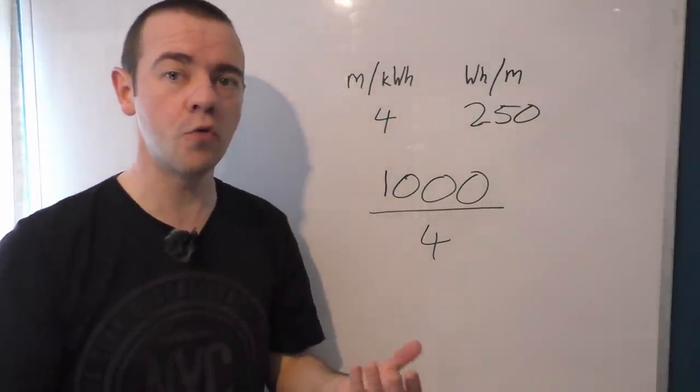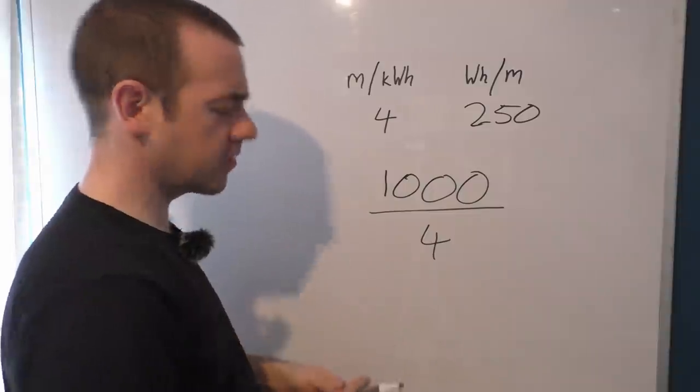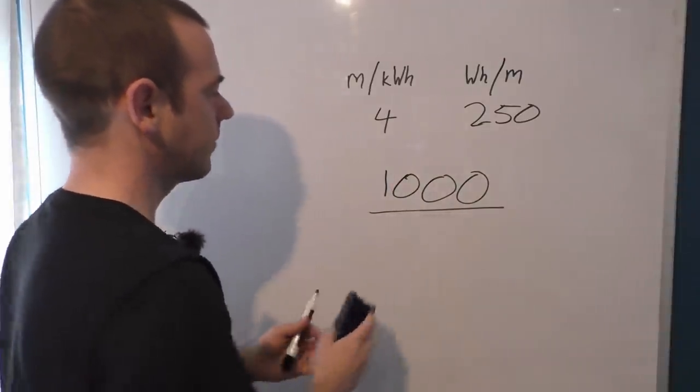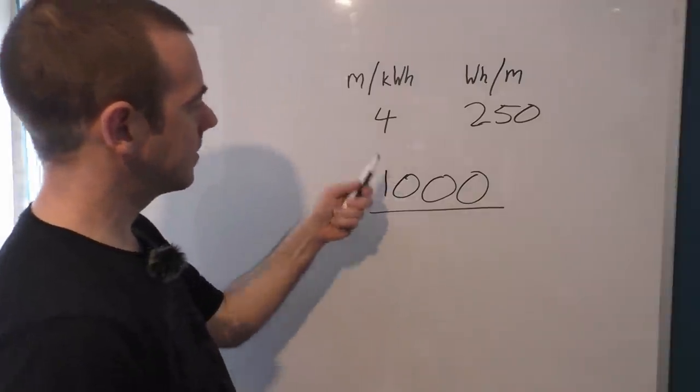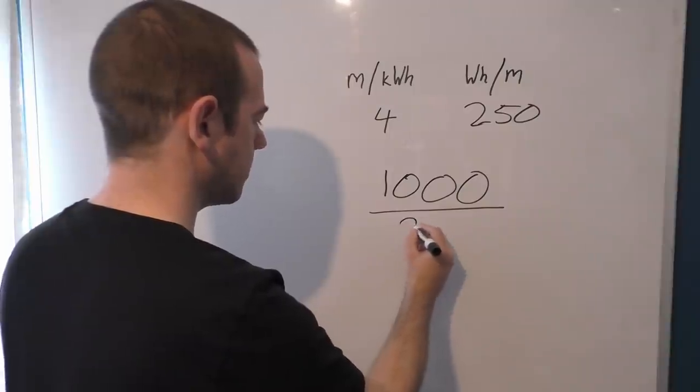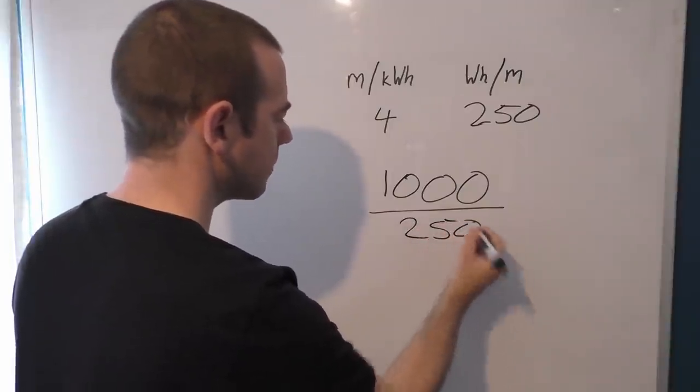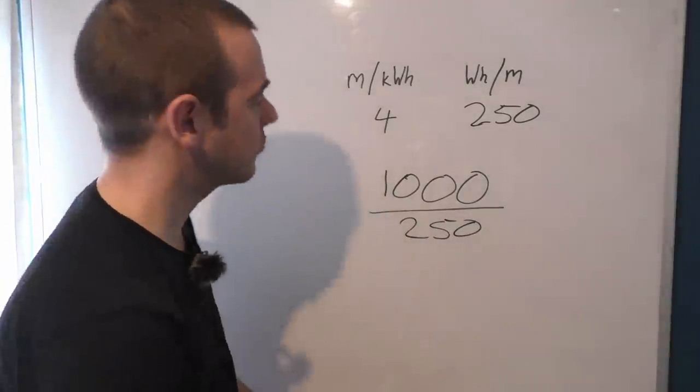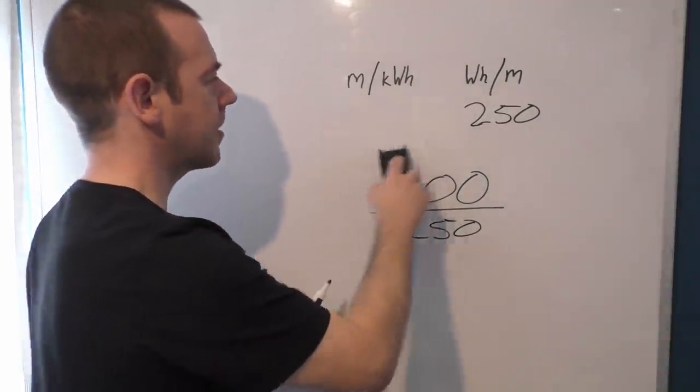But what if you want to do it the other way round? That's pretty straightforward as well. Instead of that divided by that, we do that divided by that. So 1000 divided by 250 is 4. It's literally that straightforward. So let's put that to the test.